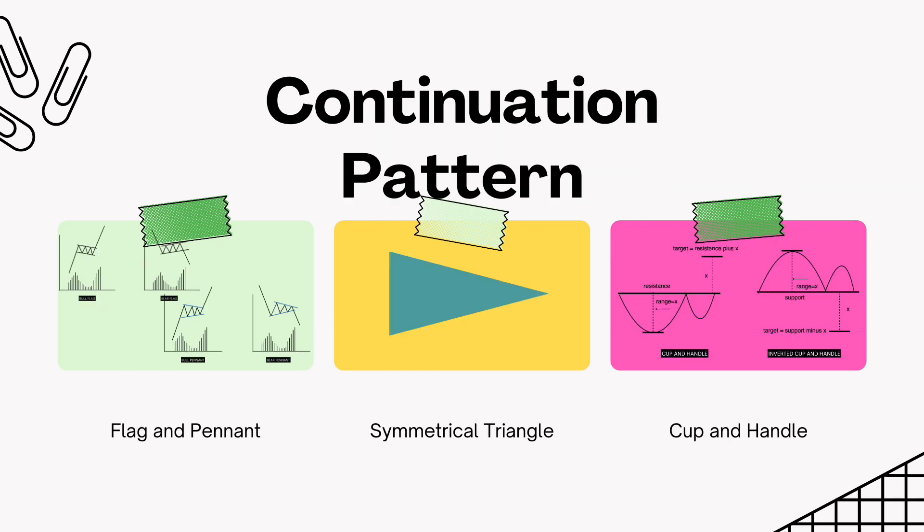Another kind of chart pattern is the continuation pattern. Continuation patterns indicate that the trend will continue on completion of the pattern. Continuation patterns are also called consolidation patterns because they allow price action to take a break before moving further in the general direction of the trend.